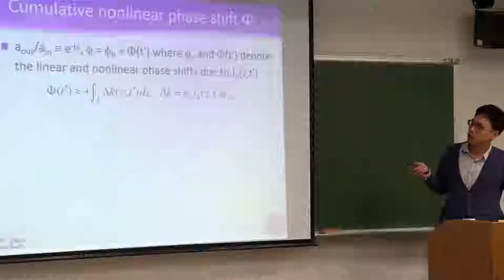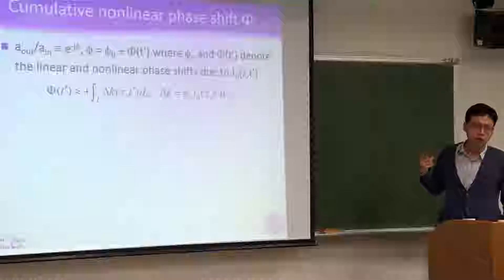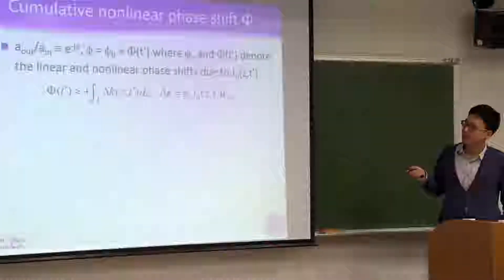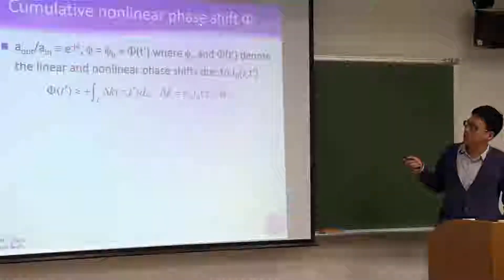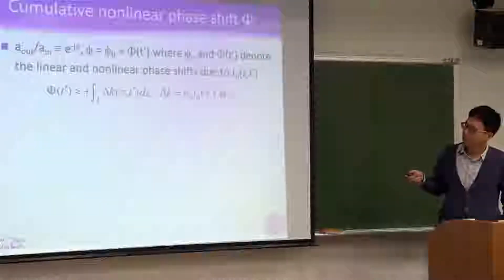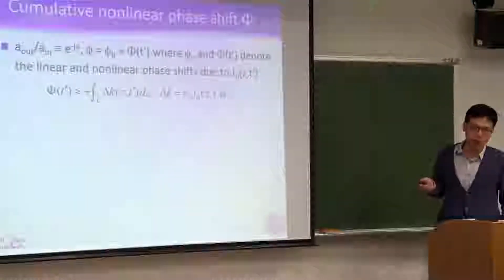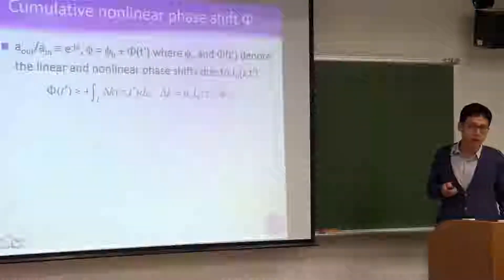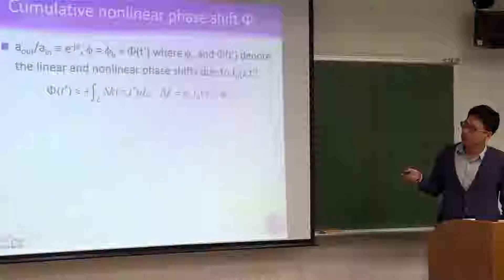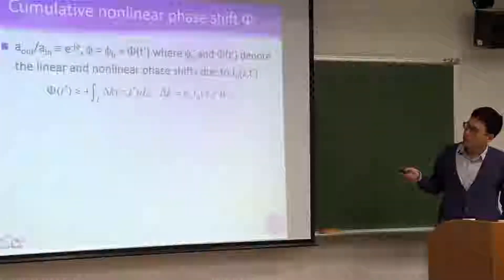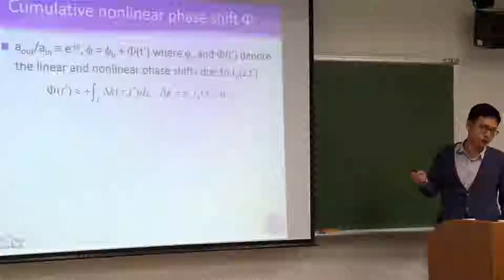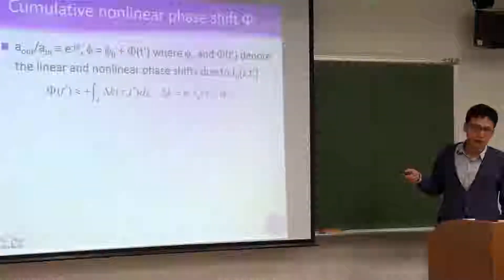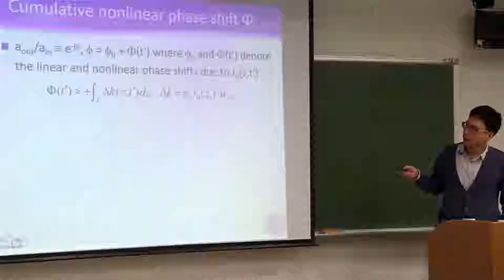Why do we need this formula? Because we want to calculate the SPM coefficient. But here let's calculate the cumulative nonlinear phase shift big phi first. Phi is defined as: output electric field over input electric field equals e to the minus j phi. In our definition, the minus sign is already assumed explicitly. So phi means the negative phase shift, and it consists of two terms: phi b and big phi.